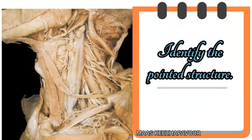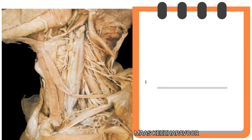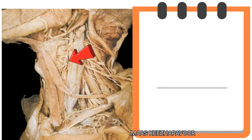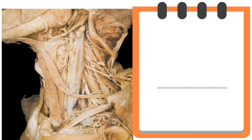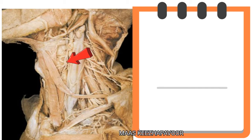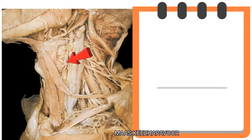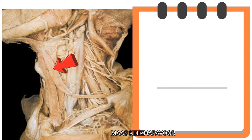Shall we see the next question? Identify the pointed structure. What is its action? The pointed structure is superior belly of omohyoid muscle. It is one of the infrahyoid muscles, depressing the hyoid bone following its elevation during either swallowing or in vocal movements.